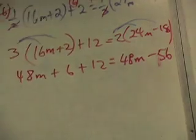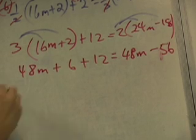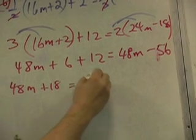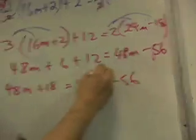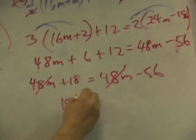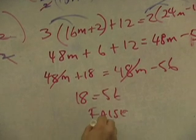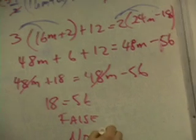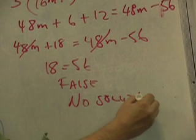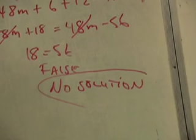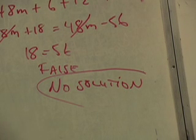But you're still going to get the same thing. You've got 48m plus 18 equals 48m minus 36. Those cancel. You get 18 equals 36, which is false. And it means no solution. And that's the way it goes. Same thing. Different manner, different method, but the same idea.